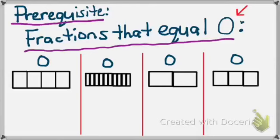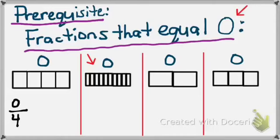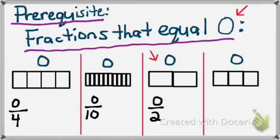Our next prerequisite reminder: fractions that equal 0. We had a whole Hershey bar broken into 4 pieces, but we have none of them — 0 fourths equals 0. Similarly, 0 tenths equals 0, 0 halves equals 0, and 0 thirds equals 0. Notice that if the numerator is 0, no matter what the denominator is, the total is still 0.